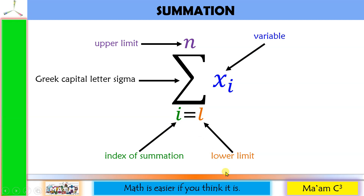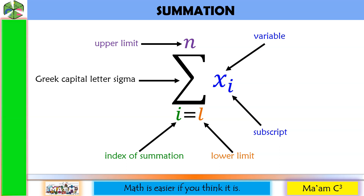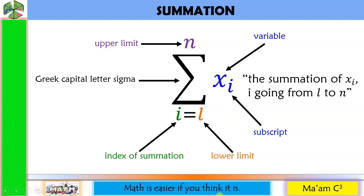This one represents the variable, while this one is the subscript. The subscript may be any letter, although I, J, and K are often used. The X sub I represents each addend in terms of the index variable I. This whole notation is read as the summation of X sub I, I going from L to N.